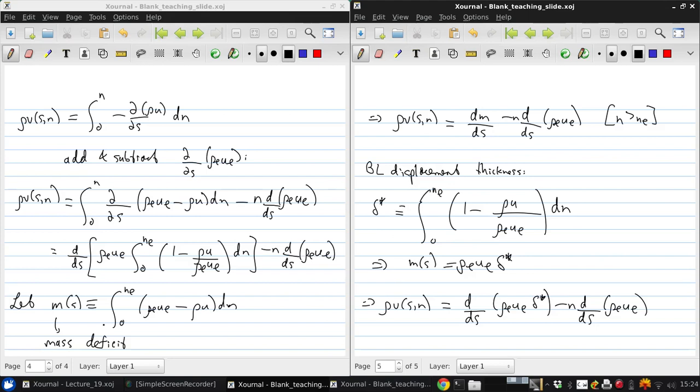Now calculating m of s and δ* of s requires a detailed analysis of the boundary layer. And we'll look at the types of analysis that one might use to get those later on. But for today, let's just assume that these are somehow known.